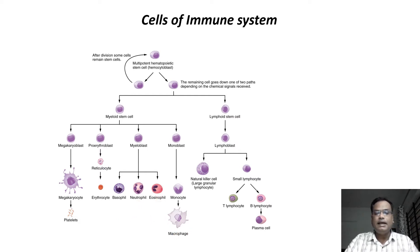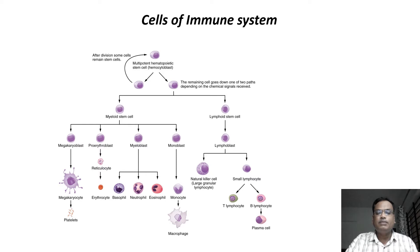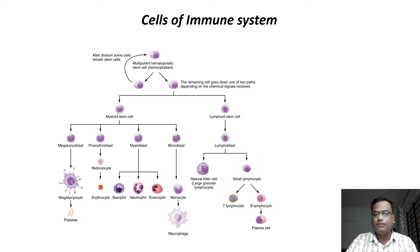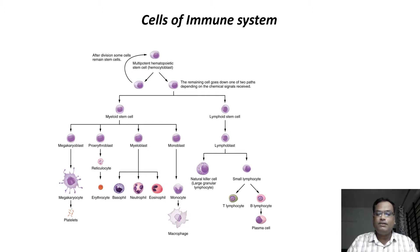The other lineage — the lymphoid stem cell — will get converted into a lymphoblast, which produces two types. One becomes the natural killer cell, a very large granular lymphocyte capable of phagocytosing pathogens. The other is a small lymphocyte that divides into T lymphocytes and B lymphocytes. B lymphocytes will give rise to plasma cells, and these plasma cells are the ones that produce antibodies.